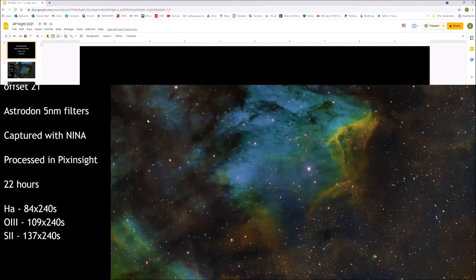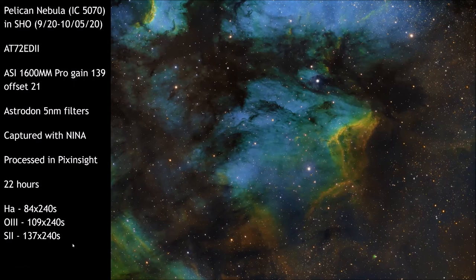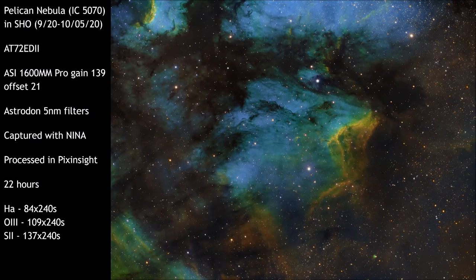Lloyd goes next and has just a couple of images. This one was a work in progress last year — he hadn't captured the sulfur channel and had presented it as an HOO image. He was able to capture that data in October shortly after the last meeting and combine it into the Hubble palette. This is using a 72mm short tube refractor, still with Matt Garten's camera that had been loaned to him, with his filter wheel and Astradon filters. This was 22 hours of data of the Pelican Nebula — Lloyd is really pleased with how it turned out, loving the detail in the nebula and all the dust visible in the image.